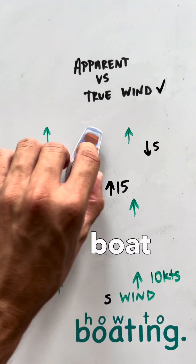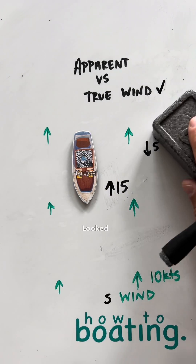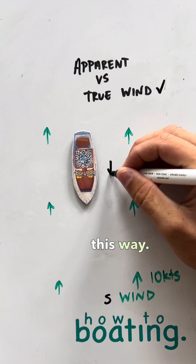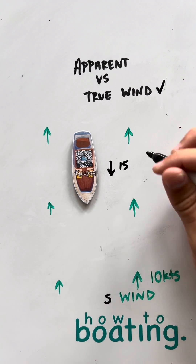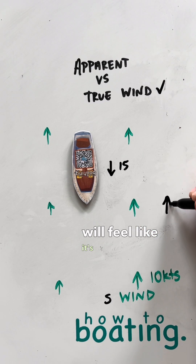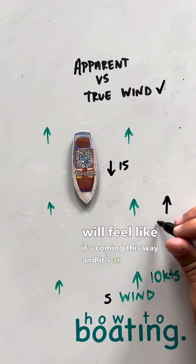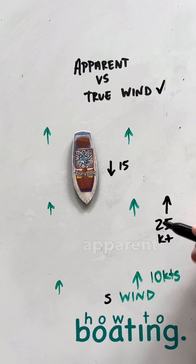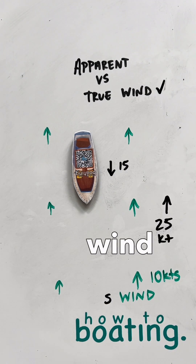Now if we turn this boat around and went 15 knots the other way — into the wind — that apparent wind will feel like it's coming at you and it's at 25 knots. So that's going to be your apparent wind when you're moving into the wind like this.